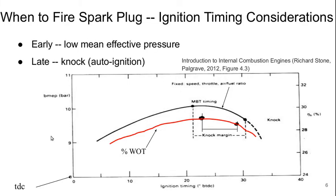Another important consideration is when to fire the spark plug in a spark-ignition engine — this is ignition timing. If we fire it too early, we'll get low mean effective pressure because some of the work from the expanding gases is fighting against the piston coming back up. If we do it too late, the air-fuel mixture may auto-ignite from compression, which is knock — an uncontrolled combustion event that typically yields poor performance as well.